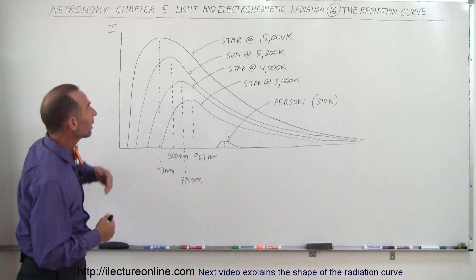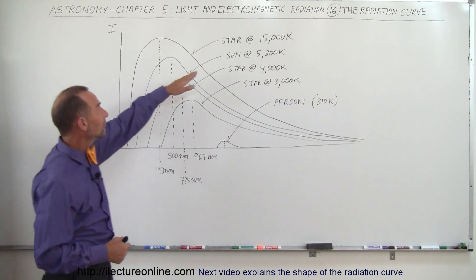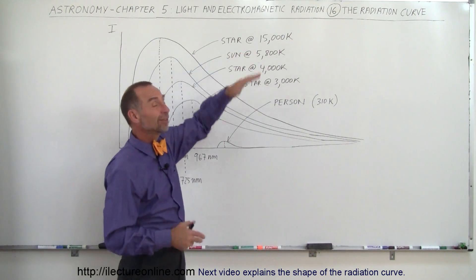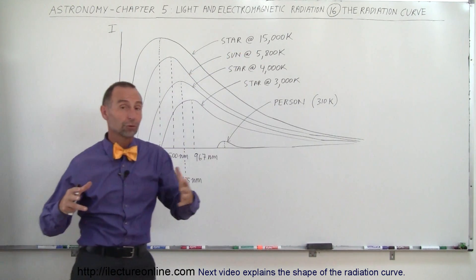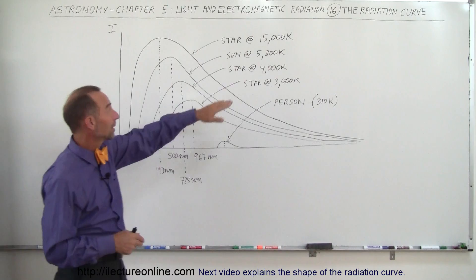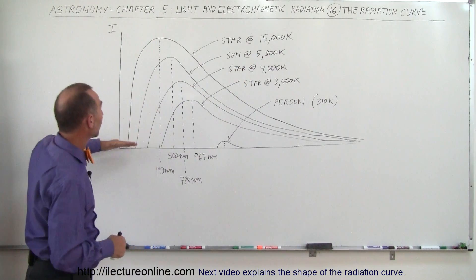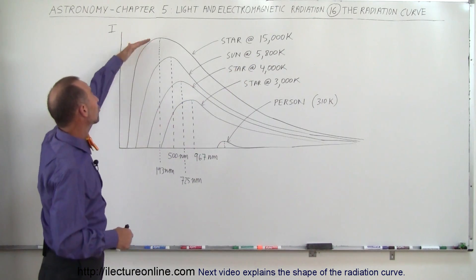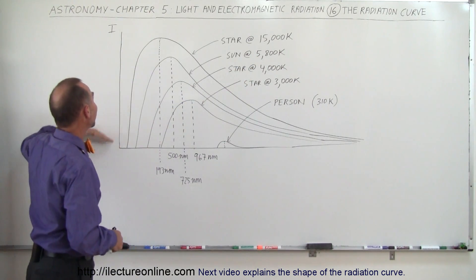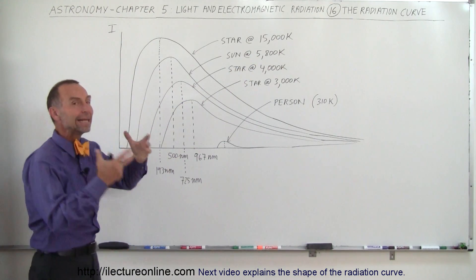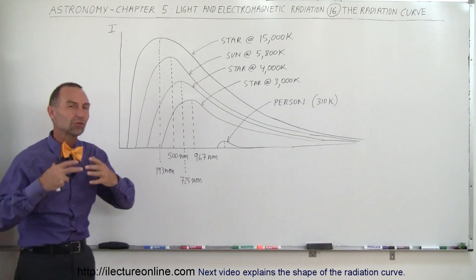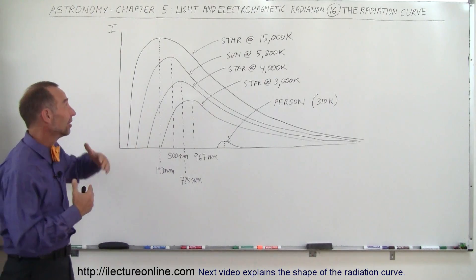A star at 15,000 degrees Kelvin on the surface, which is almost three times as high as the sun, has a much higher radiation curve, meaning the intensity of the radiation coming from that star is much higher.